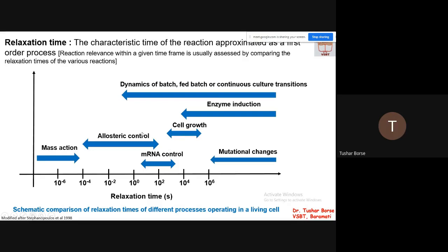Within cell growth, the reactions are regulated — one of the regulations is allosteric control. The allosteric control of metabolic pathways may have a characteristic time period of 10⁻⁴ to 10². Although the range is very large, the time required is very low compared to cell growth. The mRNA control — that is the transcription process — is in the range of around 10¹ to 10³. Then the mass action, which is the transport phenomenon occurring within the cell, requires very, very little time — it could be less than 10⁻⁴.